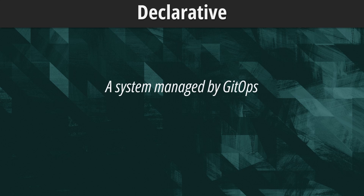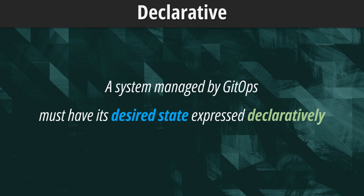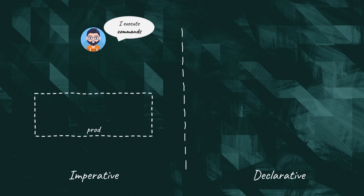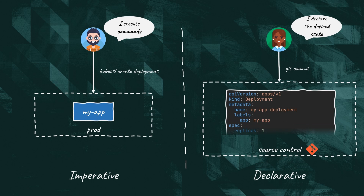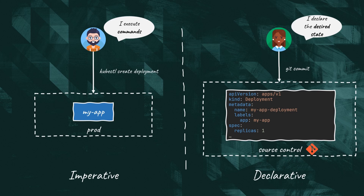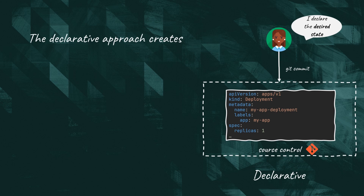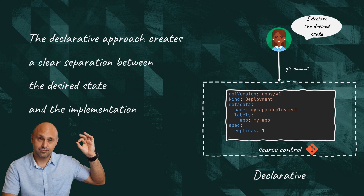The first principle is that a system managed by GitOps must have its desired state expressed declaratively. Imagine someone wanted to deploy a particular microservice in a target environment. Rather than using a command line tool like kubectl, they thought it was way better to declare their intentions by creating a deployment manifest, which in the scenario of Kubernetes is simply a YAML file. The main advantage over the imperative approach is that we have a clear separation between the desired state and the implementation necessary to achieve that state.